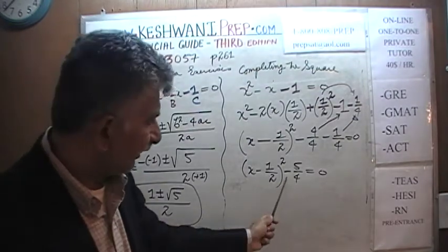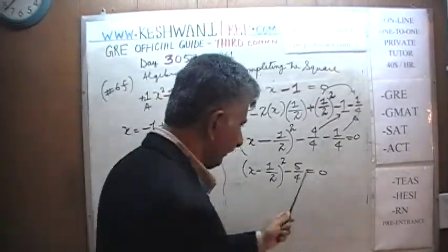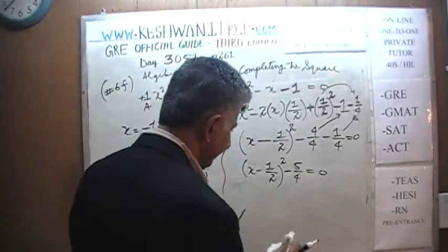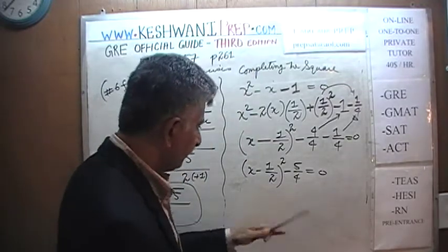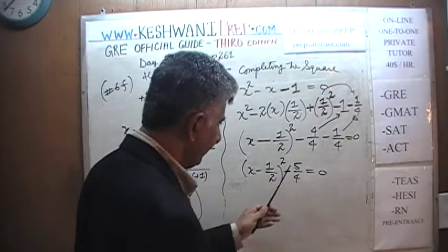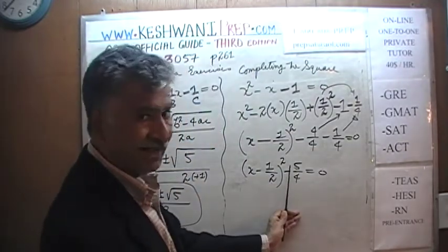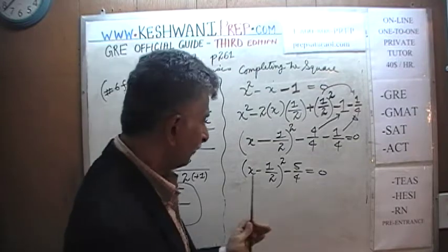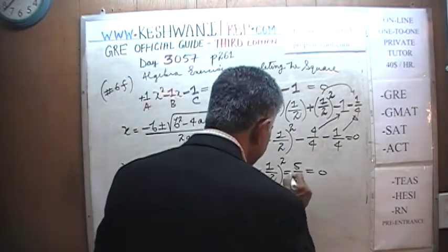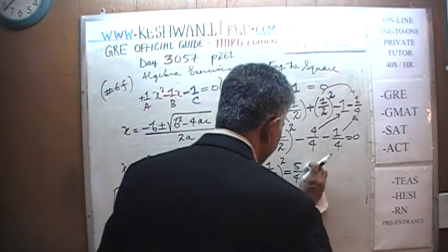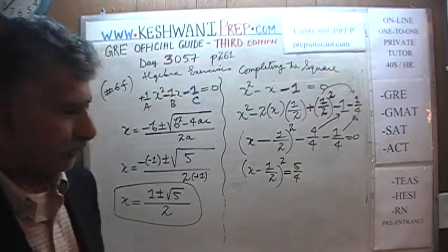Let's write the negative one as negative 4 over 4, and then minus one-quarter. Negative 4 quarters and negative 1 quarter is negative 5 quarters, and the whole thing has to equal zero. So x minus one-half squared minus 5 quarters equals zero.